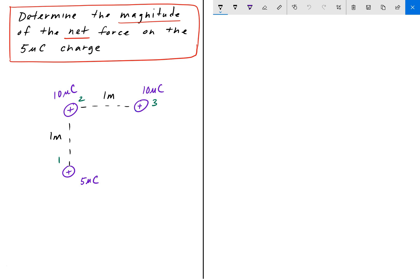Charge number one is a 5 microcoulomb charge. Charge number two is a 10 microcoulomb charge. And charge number three is also a 10 microcoulomb charge. And here we're asked to determine the magnitude of the net force on the 5 microcoulomb charge exerted by these two 10 microcoulomb charges.